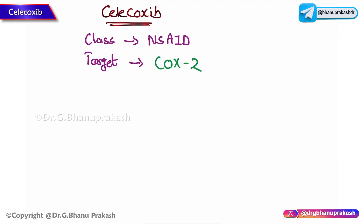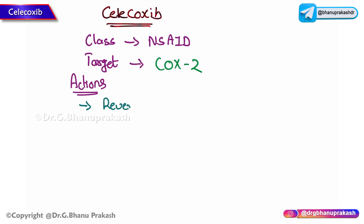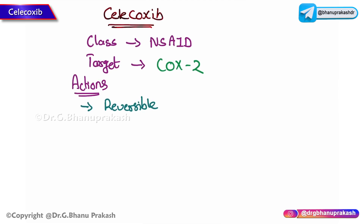Based on the COX-2 target, we need to discuss the actions. Celecoxib binds to COX-2 without permanently deactivating it, meaning it mainly inhibits COX-2. The type of inhibition is reversible and selective — very, very important. Selective inhibition means it only binds to COX-2 but not COX-1.